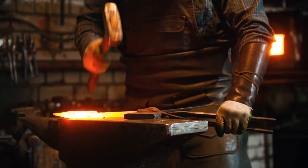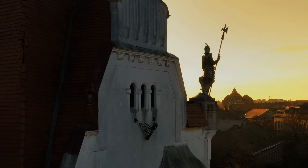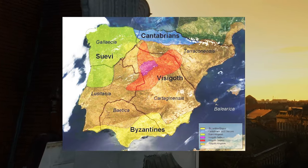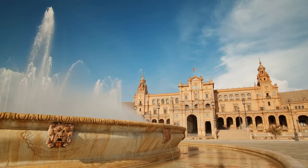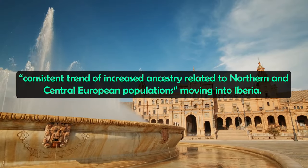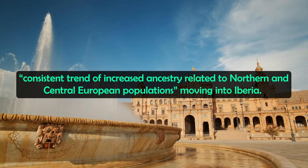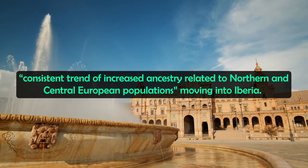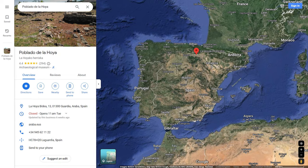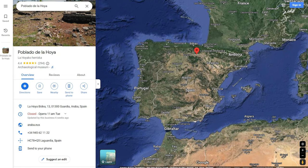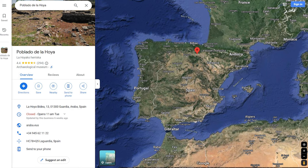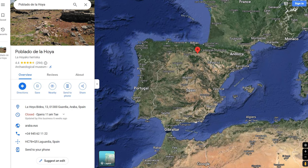Now before we move on to look at the genetic impact of Muslim rule on Spain, let's quickly look to see if any genetic changes happened during the Iron Age, during the Roman period, and also from the Visigoths. Well in the Iron Age, this study found a consistent trend of increased ancestry related to Northern and Central European populations moving into Iberia. This ancestry varied in different regions, but was found at 28-43% in three individuals at La Jolla, in the modern Basque country.